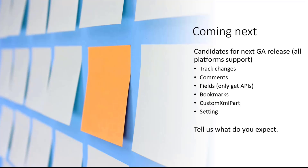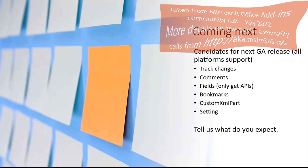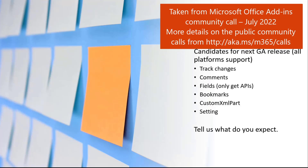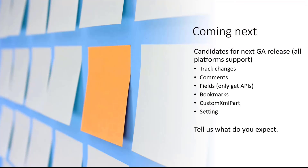But these are just the candidates, so there's always a chance we may make some changes. Please tell us what you expect for future GA releases and if you want to take advantage of more frequent deliveries for Word APIs. Thanks very much. Thanks, Yun — very cool to see all this coming out for Word APIs.